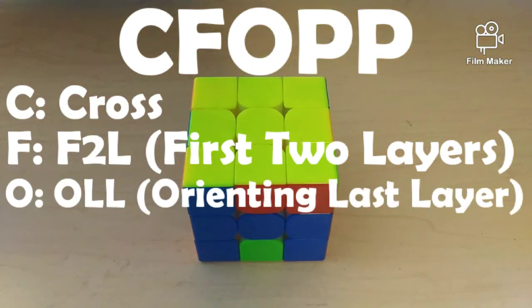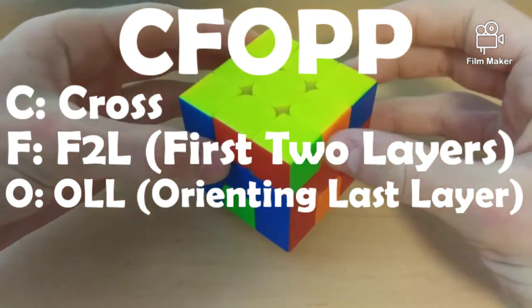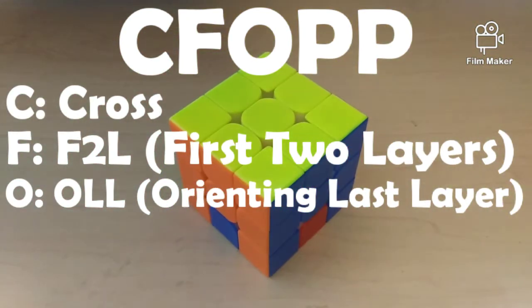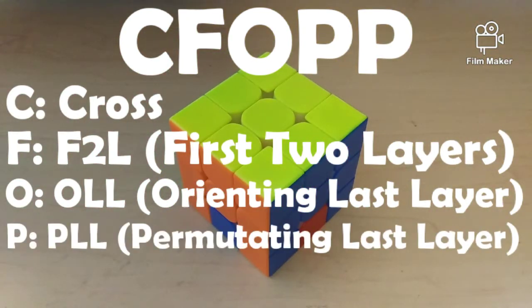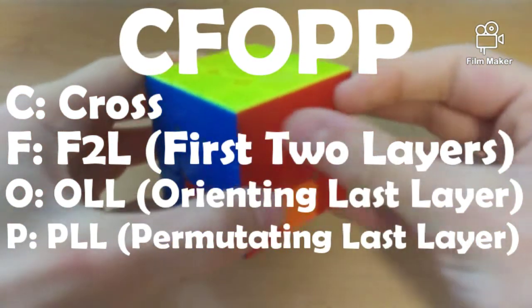Then we have O, which stands for OLL, or orienting the last layer, and this is completed by solving the side opposite of the side that you started with. So, in most cases, it will be yellow. Next up, there's P, which stands for PLL, or permutating the last layer, and this is completed by solving the last layer.